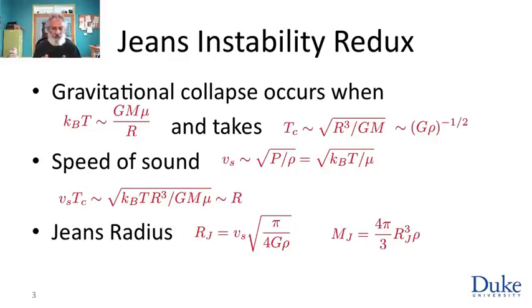What was the Jeans instability? The Jeans instability asserted that if you have a cloud of gas or nebula at some temperature and some mass and size, then when the average thermal energy kBT is of the order of the average gravitational potential energy GMμ/R, here m is the mass of the object, R its size, T its temperature, and μ the characteristic mass of a particle in the nebula, say a hydrogen atom. When these two quantities are of the same order of magnitude, then we said the cloud will collapse.